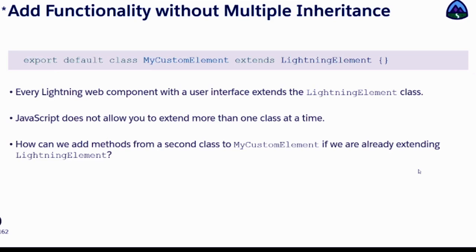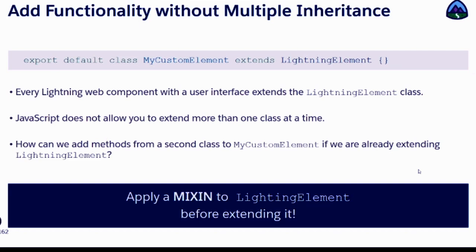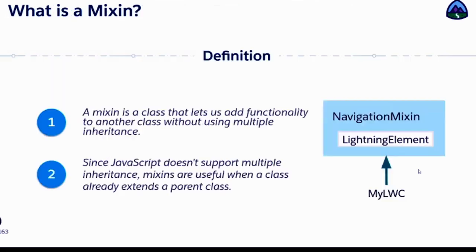For example, if you click on a button present in the custom element template, it will not take you to a different location, place, or object. To perform that navigation, we are going to use the concept of mixin. The mixin concept comes from JavaScript, and it allows a class to extend from multiple classes. So your custom element can extend LightningElement and other classes as well — you'll be mixing two classes into one.